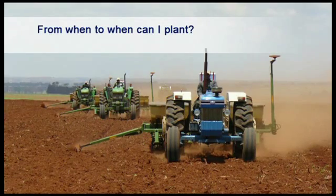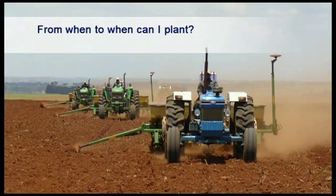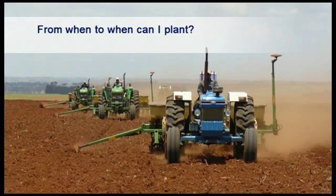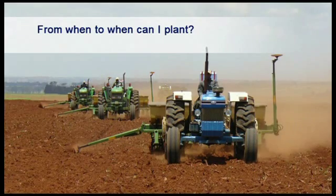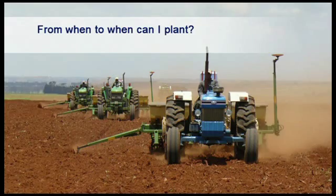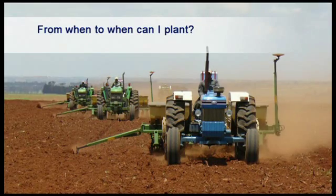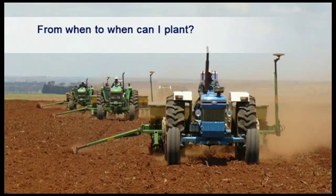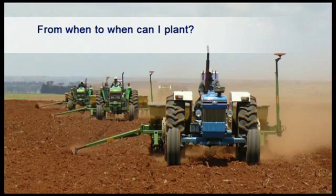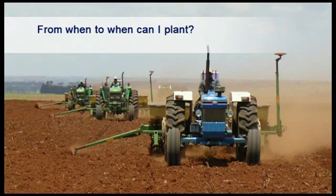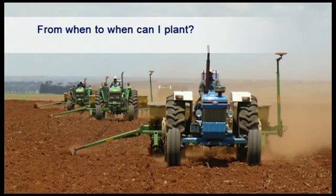With the introduction of no-till and round-up ready cultivars in South Africa, as well as a 50-50 rotation system of maize and soybeans, farmers may start planting soybeans at the same time as maize, which can be as early as the end of September to early October.